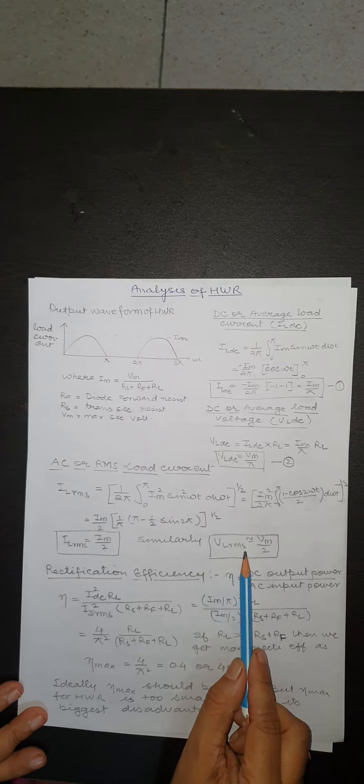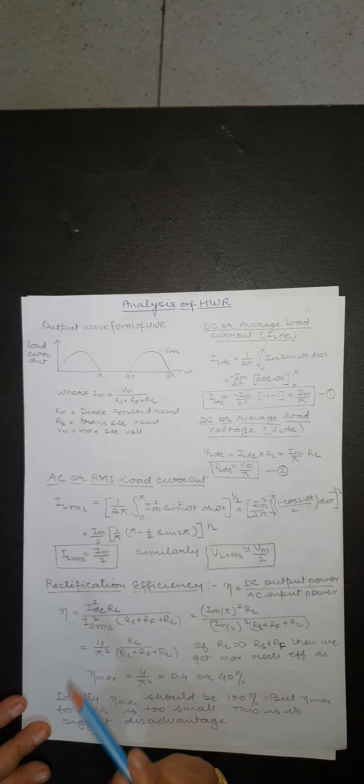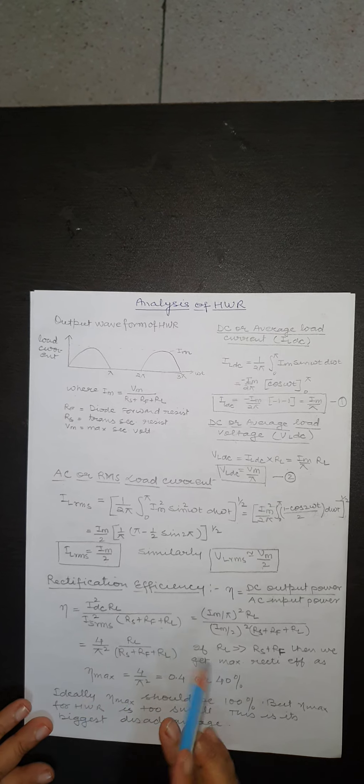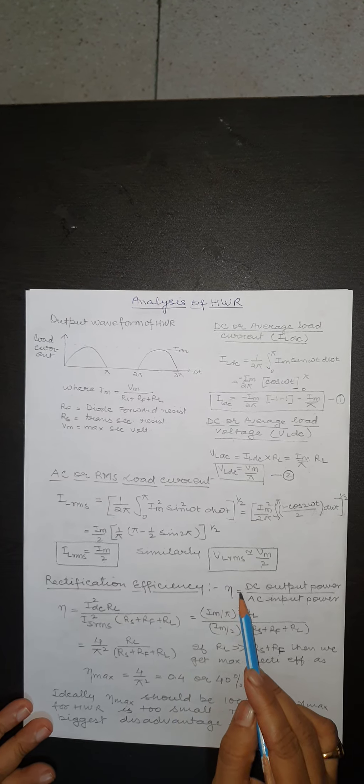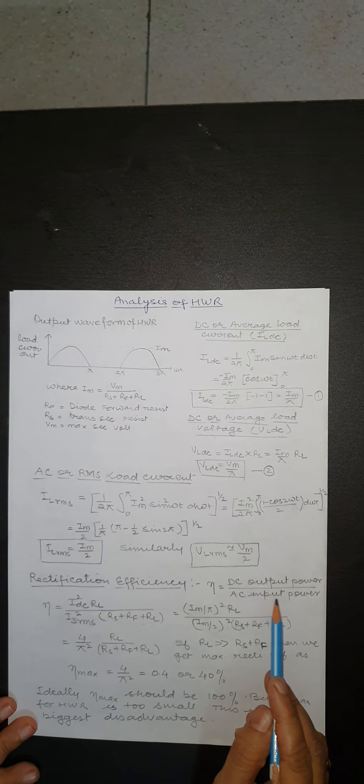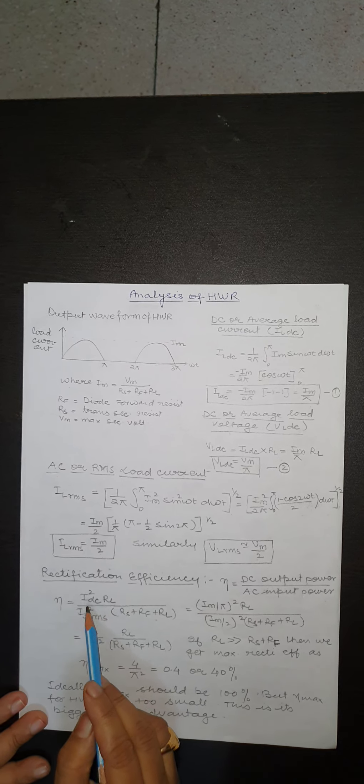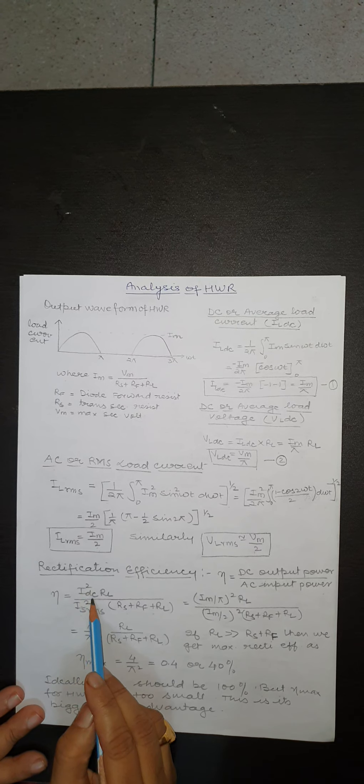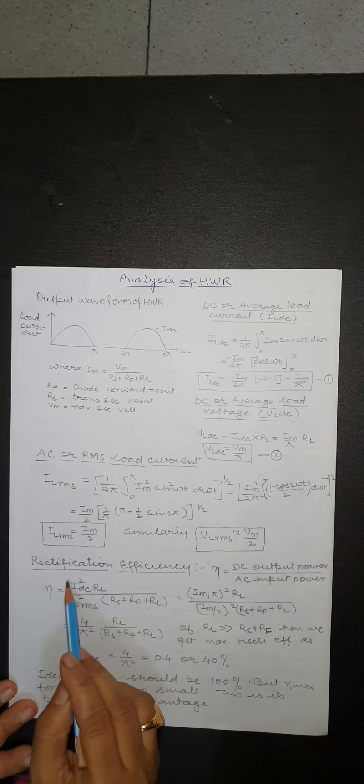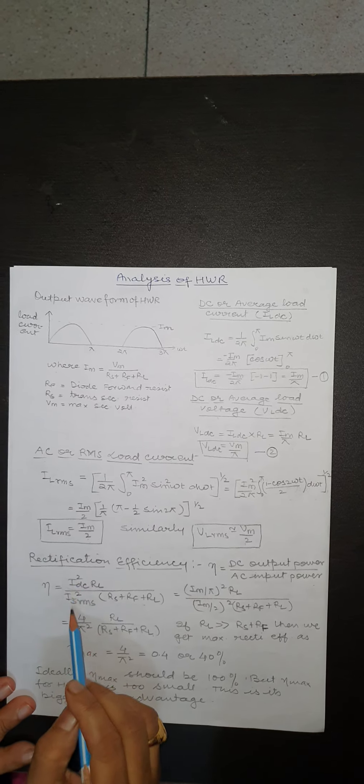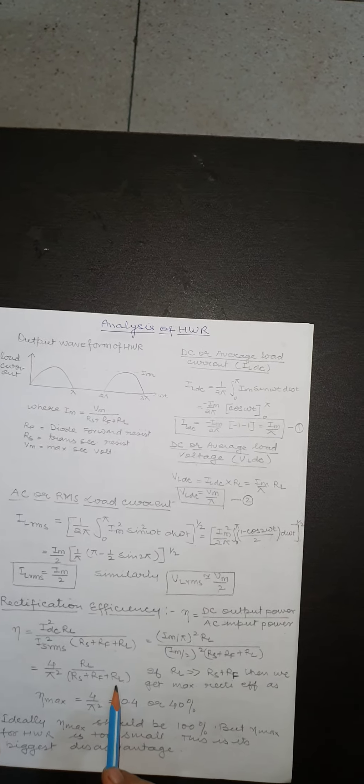Next parameter is rectification efficiency. Rectification efficiency is denoted by η and it is given by DC output power divided by AC input power. Substituting the values of IL,DC squared RL and IS,RMS squared, we get this equation.